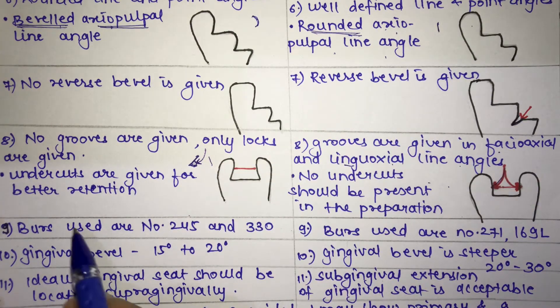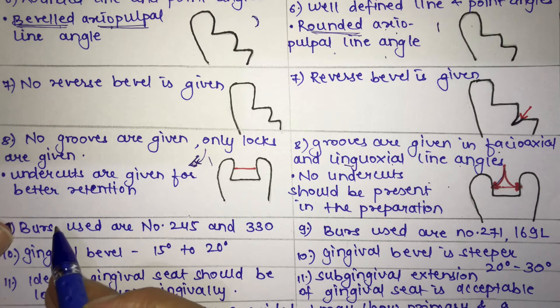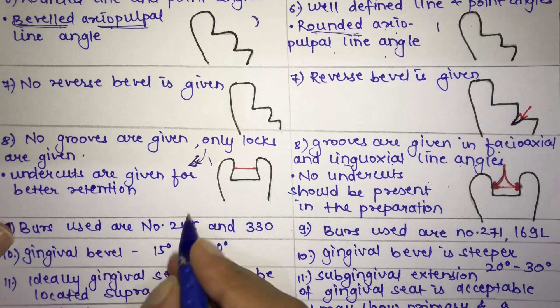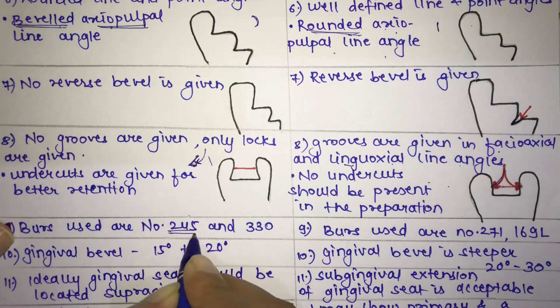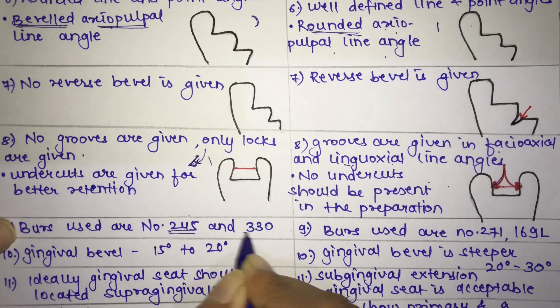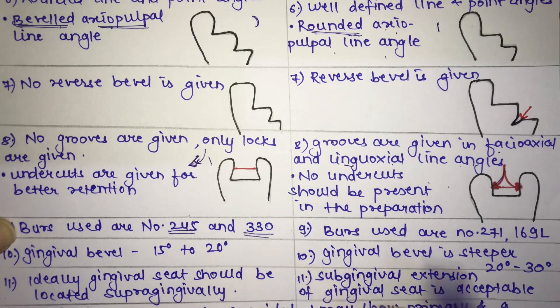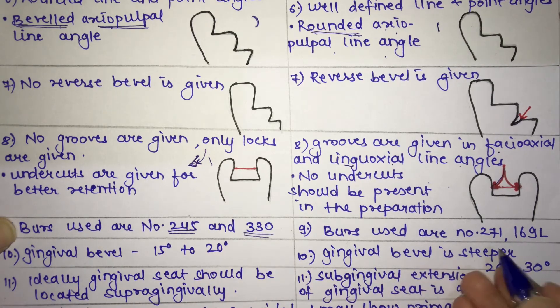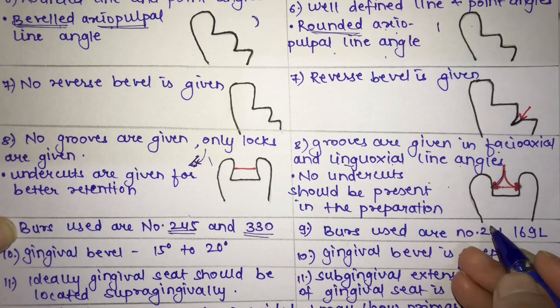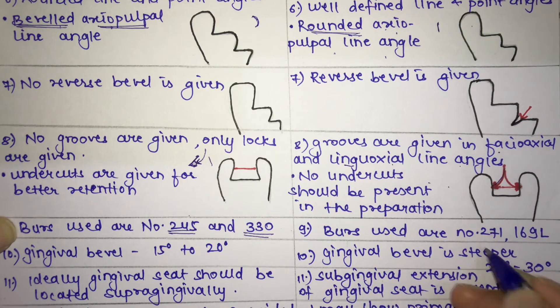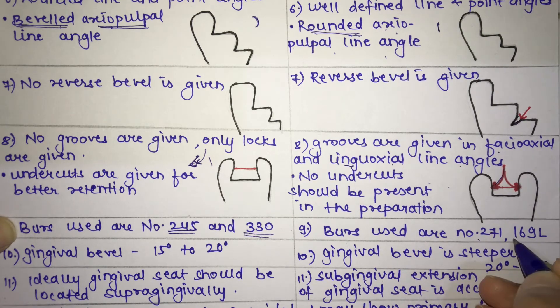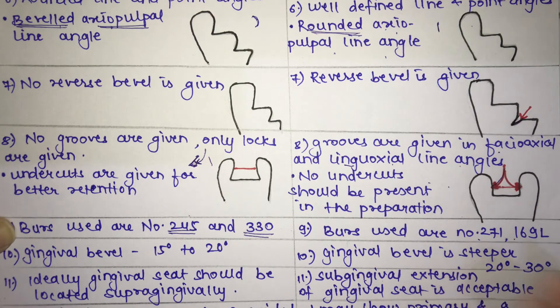The burs used in amalgam are 245 and 330, whereas the burs used in cast restoration are 271 and 169L.